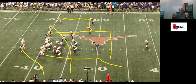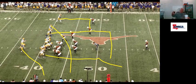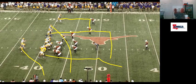Quarterbacks like this route, and we like this route to go fast because it's a straight progression read. I'm going to lurk the corner — if it's one-on-one and he gets a great release, I'm going there. If not, I'm going to the tailback. The halfback's coming out in the flat. Does the linebacker take it?